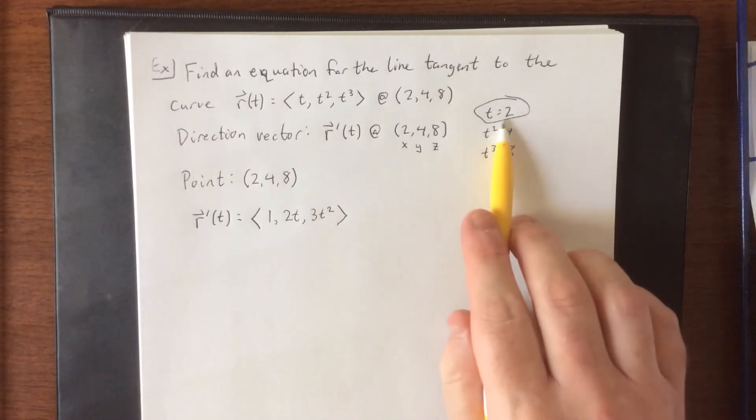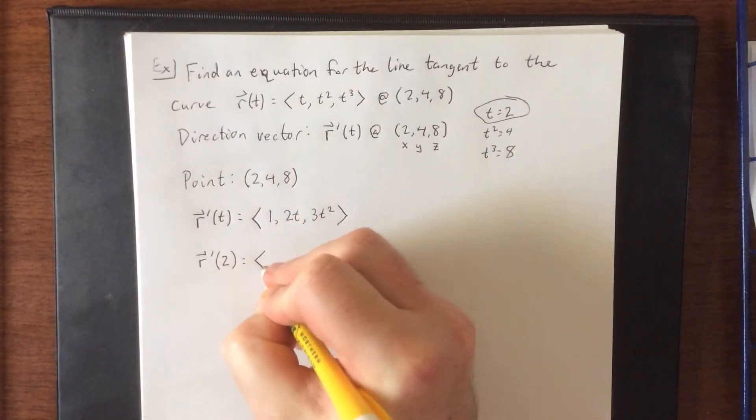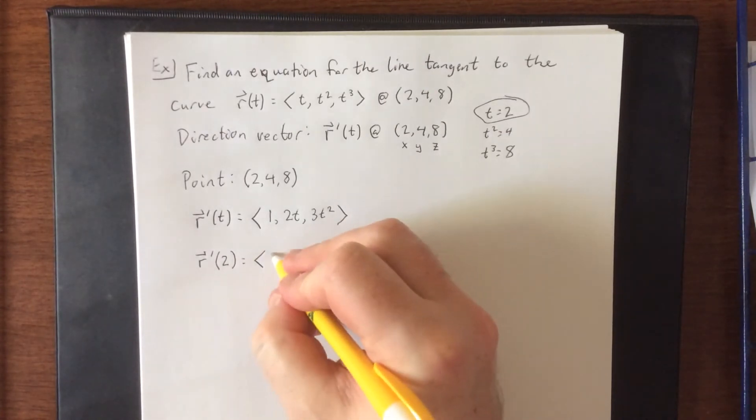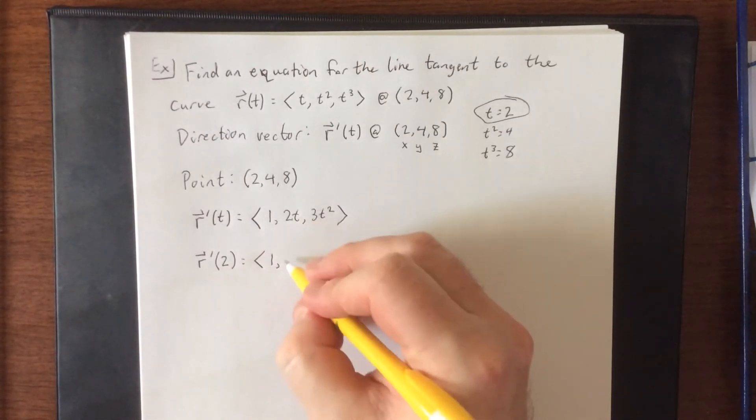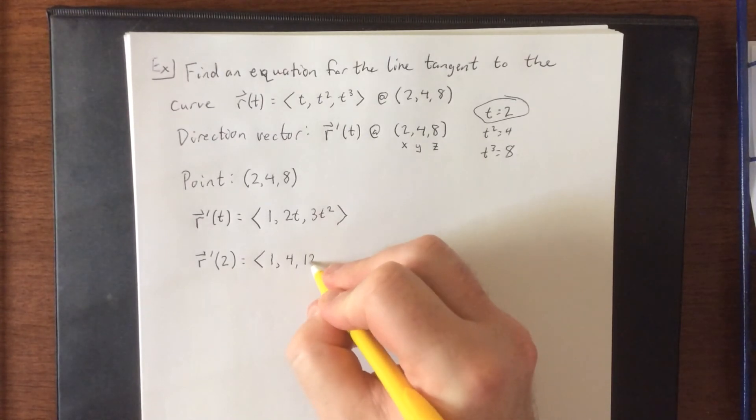Plugging in the value of the parameter, that'll be r'(2) is equal to, plugging in t equals 2 for each of these, we'll get 1, 2 times 2 is 4, and 3 times 2 squared is 3 times 4, that is 12.